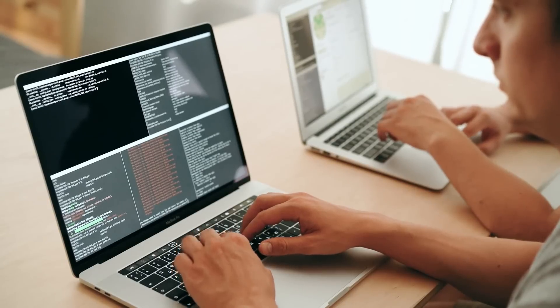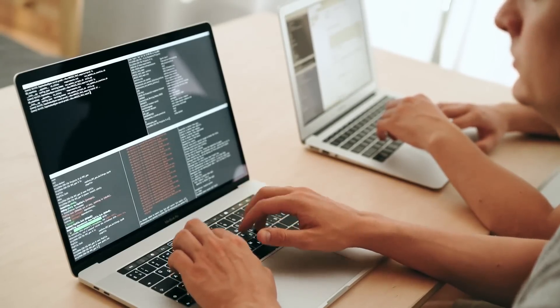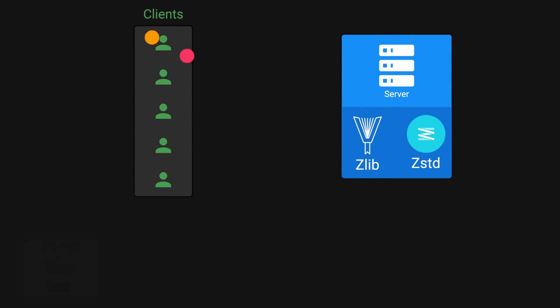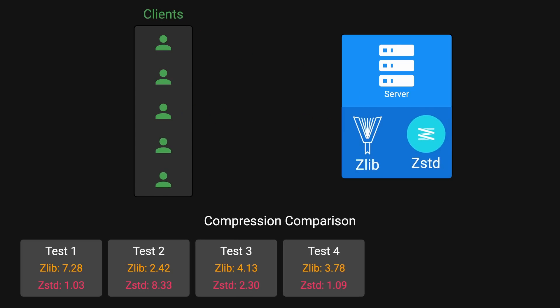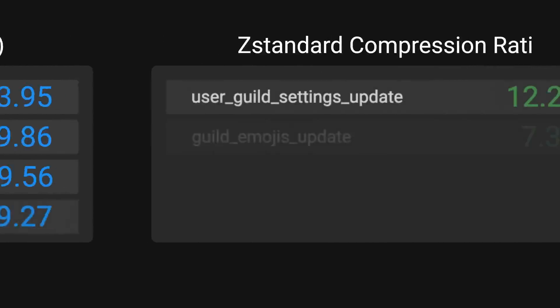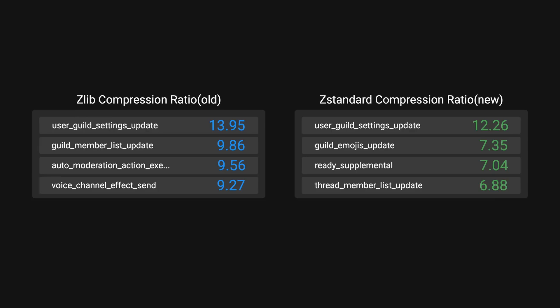So they pushed the change on a Friday night to production to test — just joking, didn't mean to cause PTSD here. Instead of applying the switch entirely on production, they decided to test against a very small subset of data. This was done by comparing a small percentage of traffic using both Zlib and ZStandard and seeing how they fare with each other. They compared the compression ratios of various types of messages, and the results were quite disappointing. For example, for user guild setting update messages, Zlib had a compression ratio of 13.95, while ZStandard only achieved 12.26.